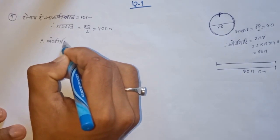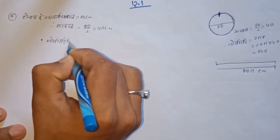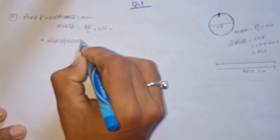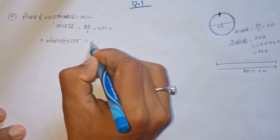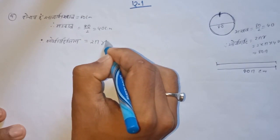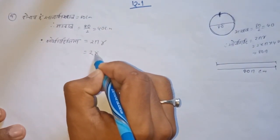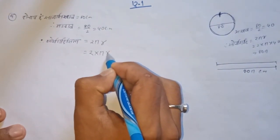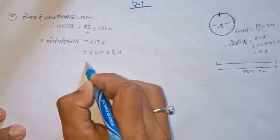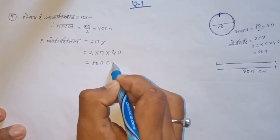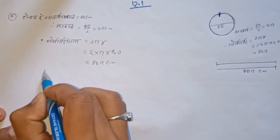Circumference equals 2πr, equal to 2 into π into r, which is 40, equal to 80π cm.